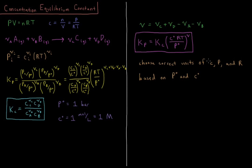We need to be careful to choose the correct units of concentration, pressure, and gas constant consistent with whatever P0 and C0 are. Typically it is easiest to use P0 = one bar and C0 = one mol per liter. Note that mol per liter is not an SI unit — the SI unit for volume is meters cubed, and 1000 liters equals one meter cubed. Make sure that whatever unit you use for R, you use the correct corresponding units for P0 and C0.